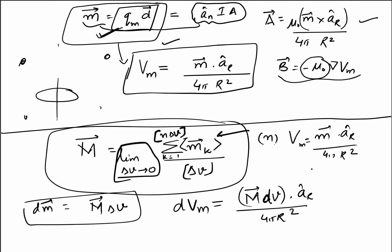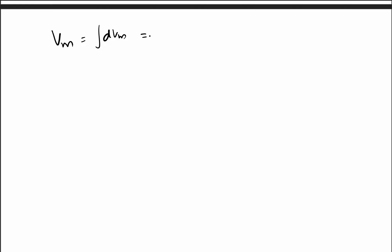We are considering a magnetic material and trying to find the scalar potential at a point P where there are no current densities. The total scalar magnetic potential is found by integrating dVm, giving Vm equals one over 4 pi times the integral over volume v-prime of M dot a_r dv-prime over r squared, where dv-prime integrates over the volume where the magnetization exists.